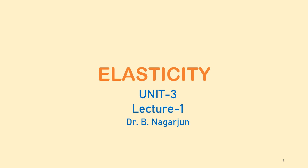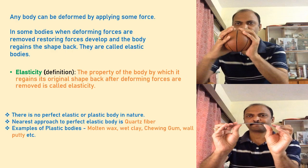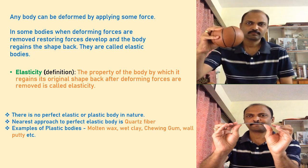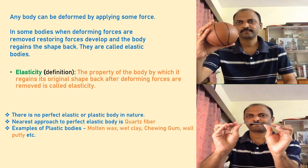Students, today we are starting our Unit 3: Elasticity. Any body can be deformed by applying some force — deforming in the sense of changing the shape of the body. In this first video, you can see I am trying to deform a ball. When I remove the deforming forces, the ball regains its original shape. In some bodies, restoring forces develop and the bodies can regain their shape back; they are called elastic bodies. Elasticity is the property of a body by which it can regain its original shape after deforming forces are removed.